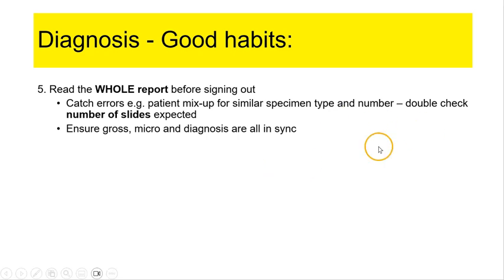If you are reporting, say, a series of five to six thyroid FNAs, one of the quick ways we can do this is to double check the number of slides expected and make sure that this is correct for the case. And of course, we also want to always check the patient's name and identifier and match it to the specimen number.